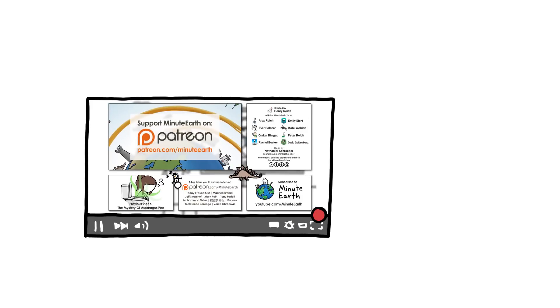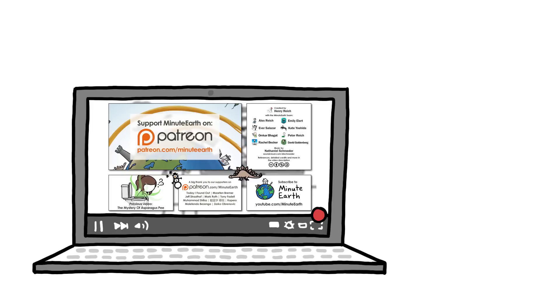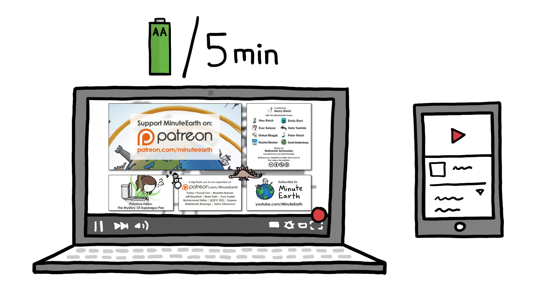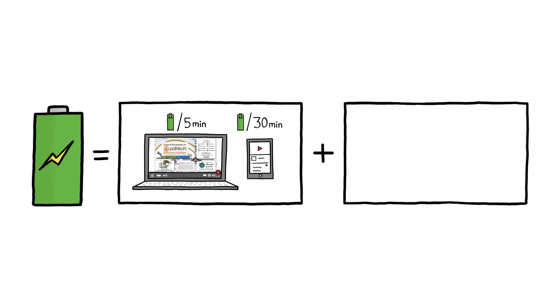Some of that energy is used by your device itself. Laptops consume around one AA battery's worth of energy every five minutes, mobile phones and tablets use one every half hour or so. That's a lot of juice, but it's only a portion of the total energy used to watch an online video.